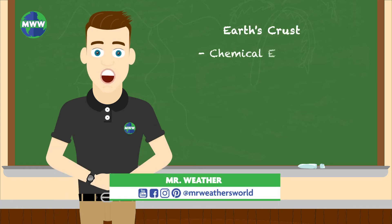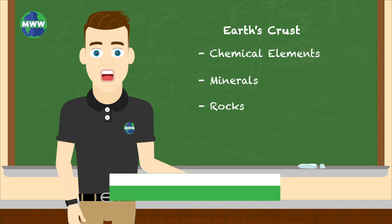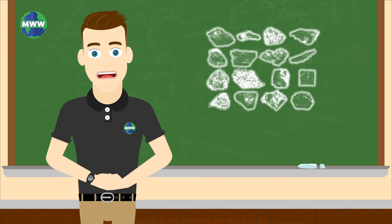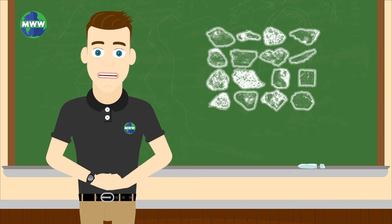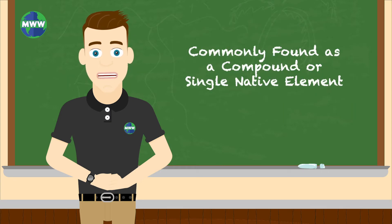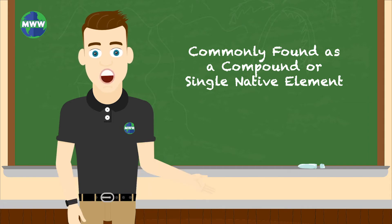The Earth's crust is composed of chemical elements, minerals, and rocks. Minerals are naturally occurring solid substances that are formed by geological processes, most commonly found as a compound but can also be made of a single native element — for example, gold.